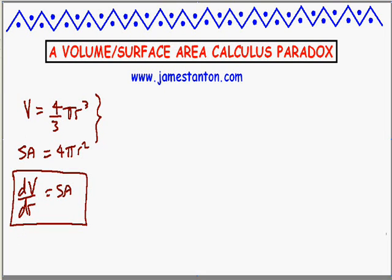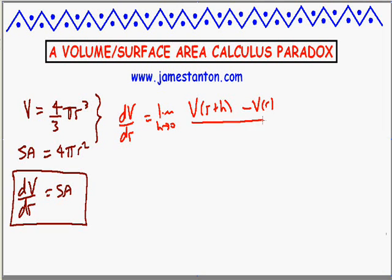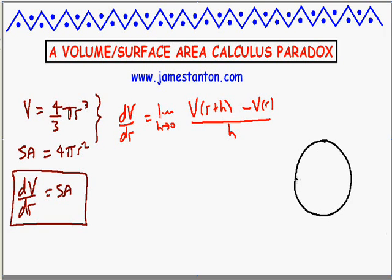I'm going to go back to basics. When I don't know what to do in calculus, I often just go back to basics. So what does derivative mean? The derivative of volume with respect to r would be the limit as h goes to zero of V(r+h) minus V(r), all divided by h. What I'd like to do is just go through an intuitive argument first. Can I get a feel for what's really going on? V(r+h) is the volume of the sphere of radius r+h, and I'm taking away the volume of the sphere of radius r. Let me draw those — a sphere of radius r.